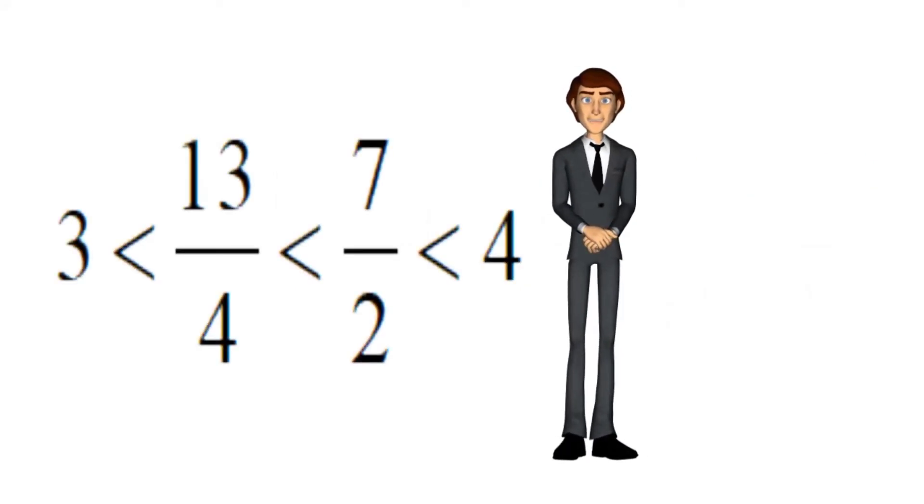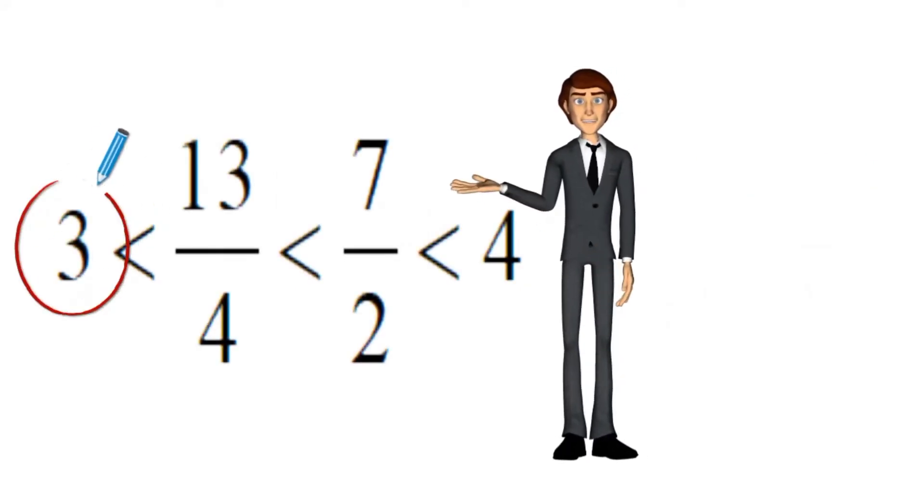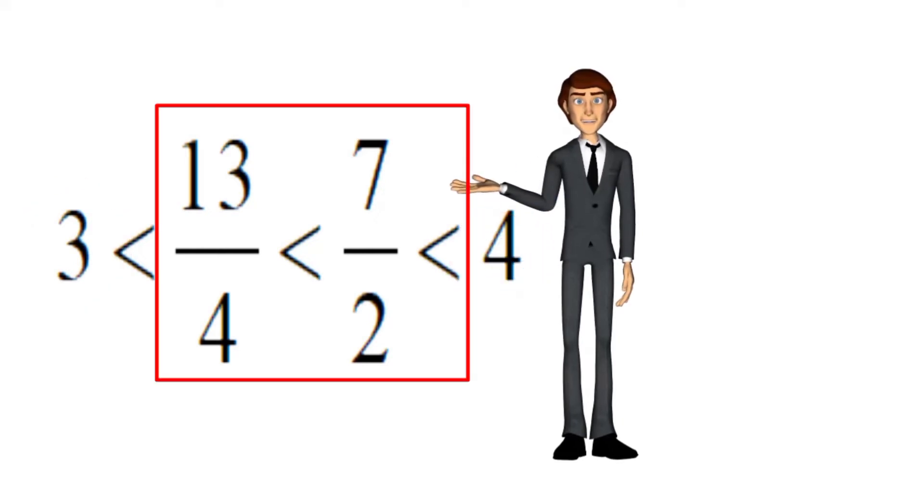So the two rational numbers between 3 and 4 are 13 by 4 and 7 by 2.